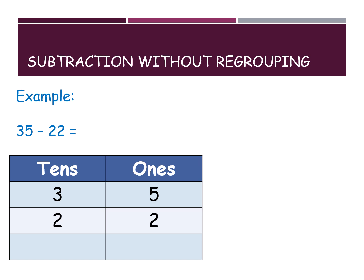Here is subtraction without regrouping. We are taking 35 and 22, and we are dividing into tens and ones. In 35, the tens digit is 3 and the ones digit is 5. In 22, the tens digit is 2 and the ones digit is 2.